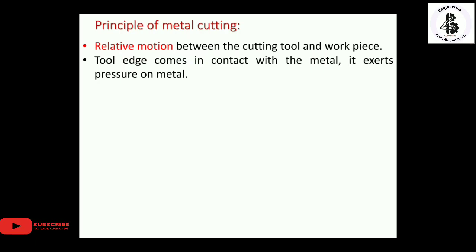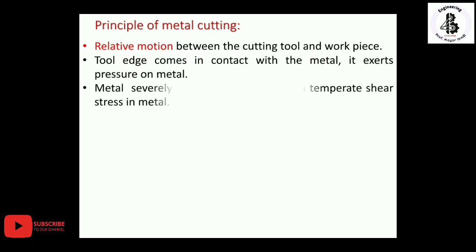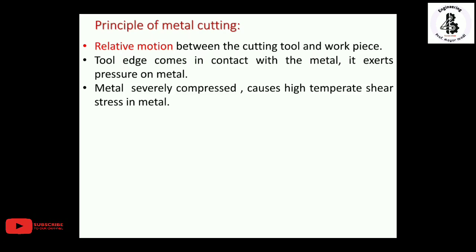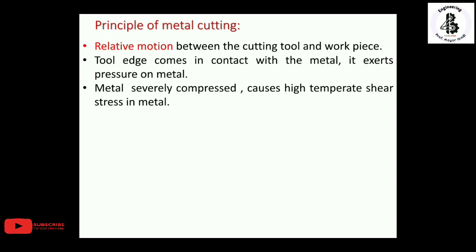In the case of non-conventional machining, the tool edge and workpiece are never in contact. In conventional cutting, the metal is severely compressed, causing high temperature and shear stress. The cutting force — also called the cutting pressure — must exceed the yield stress of the material. There is always some friction between the tool edge and the workpiece, which causes the temperature to rise in the materials.